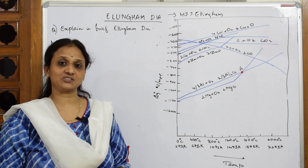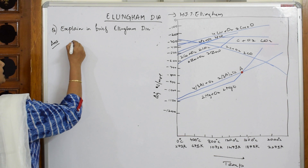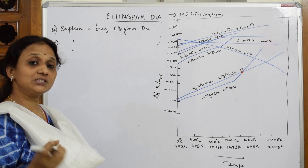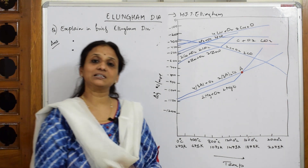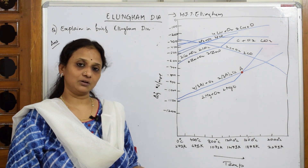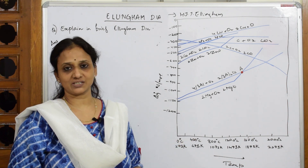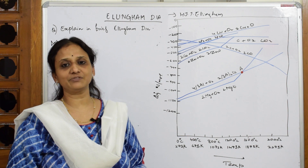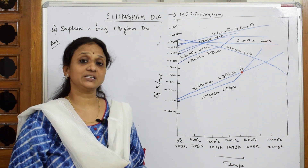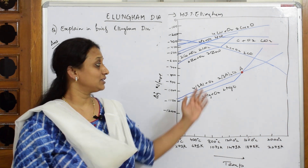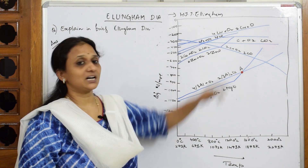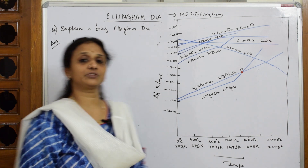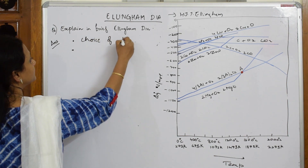Basically the Ellingham diagram explains two important concepts. First, this diagram will help us to choose the correct reducing agent. In metallurgy we are trying to convert metal from the ore — converting ore into metal oxide, and then using different reducing agents to reduce it to the required metal. The choice of which reducing agent to use, and which will reduce which — that is what the Ellingham diagram explains. So the first important keyword is: choice of reducing agent.